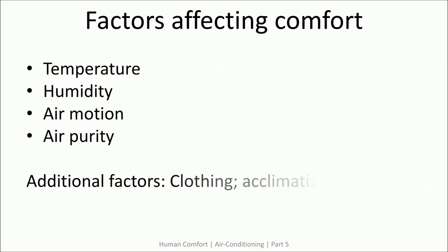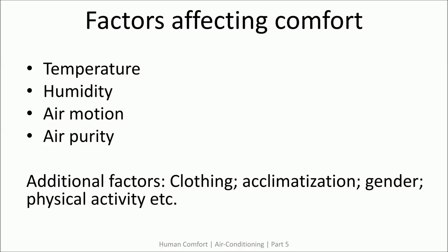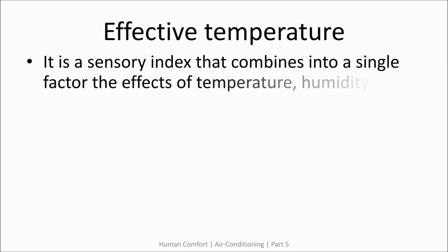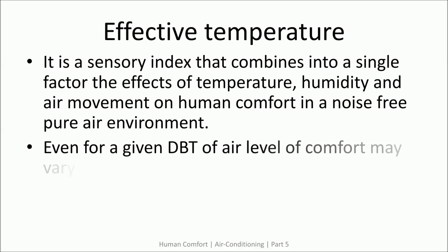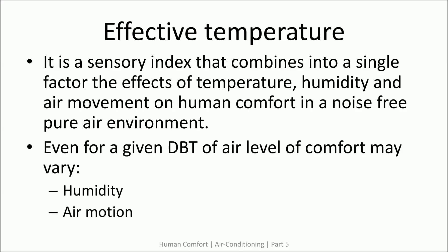Out of these many factors, temperature, humidity, air motion, and purity are more dominant and also under greater control of the operator or air conditioning designer in an enclosed space. For example, the type of clothing or the metabolic rate of a person entering a room is a variable not under the control of operations. The four major factors affecting human comfort are combined into a single sensory index called effective temperature. One important thing to note is that it is defined in a noise-free environment.